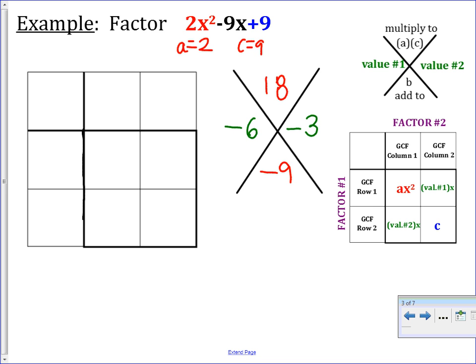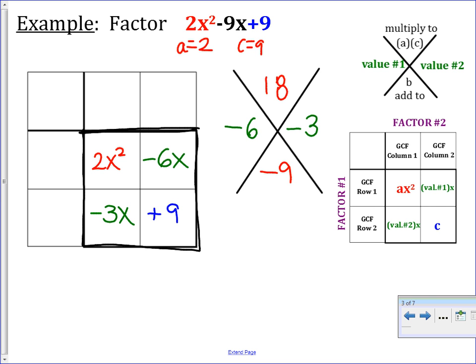The part of the box we fill in first is the middle square — this is going to be our quadratic. Here we have ax², so 2x². The other corner we have c, which is +9. On the diagonal we take our two values: −6x and −3x. So if we look at what is in the middle right now, 2x² − 6x − 3x + 9, this will simplify to the quadratic we started with. From here, we find our GCFs. The GCF of 2x² and −6x is 2x — both have an x and both have a 2.